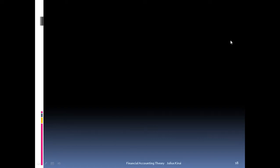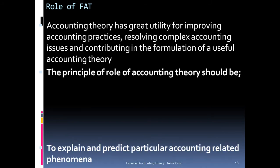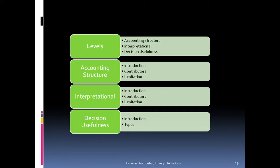We come to another important lesson which will take us through the classifications of the labels of accounting theory. Under our classifications of theories, we have accounting structure, interpretation, and decision usefulness.